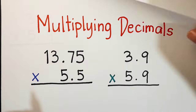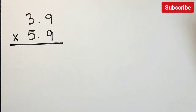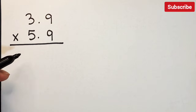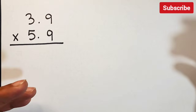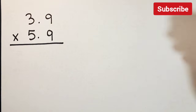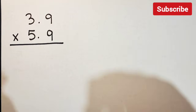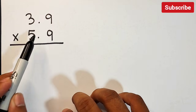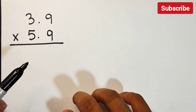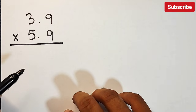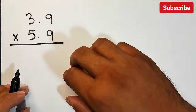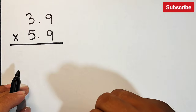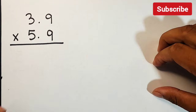Here is the first example for tonight's video: 3.9 times 5.9. There are different ways to multiply decimals, but this is the format I'm going to give you. As you can see, we have 3.9 and 5.9, both of which have decimal points. In this format, we will first ignore the decimal points.